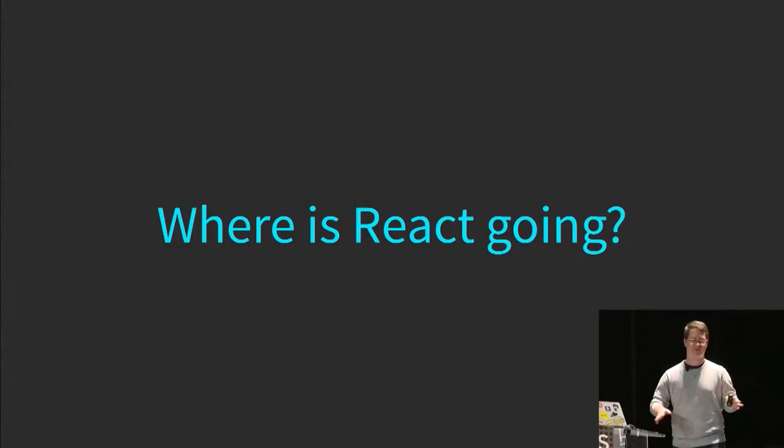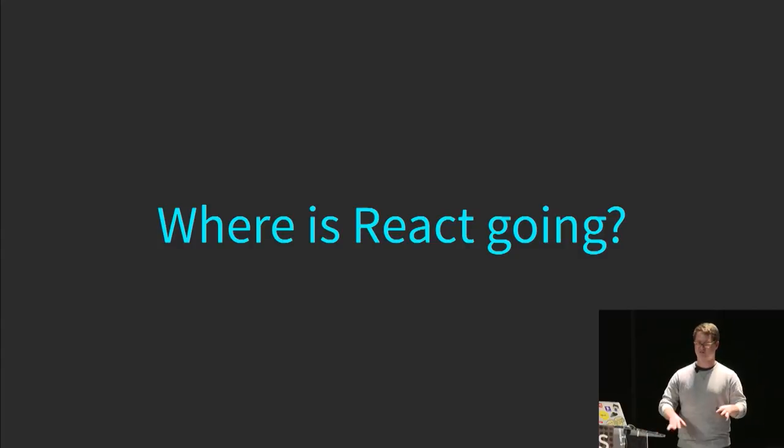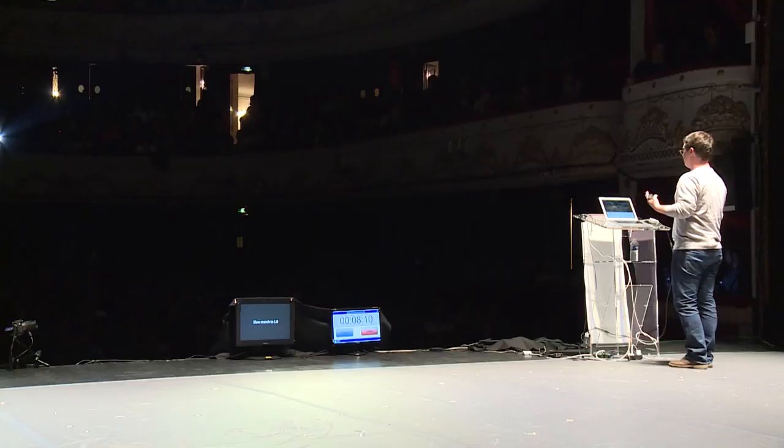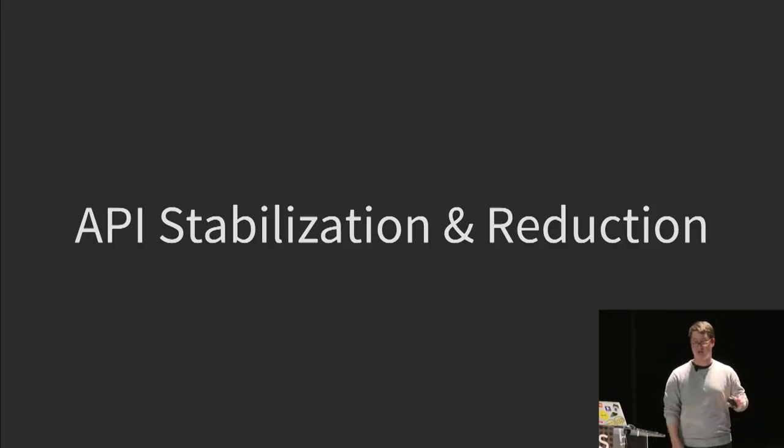So where is React headed? There are a few big ideas here. Some of this will be a part of 1.0, some of it won't. We're on a slow march to 1.0 — right now we're at version 0.12, and version numbers are rather arbitrary, but we've been slowly moving towards this stable 1.0. Over the last 18 months we've taken a lot of time to figure out what that means, both for our internal use at Facebook and for what the community is doing. We've been solidifying the core concepts, working on communication with the ideas, and API stabilization and reduction is super important.